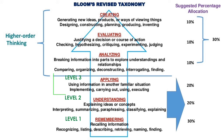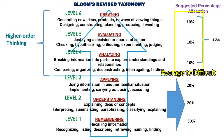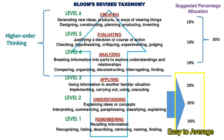For higher order thinking skills, which fall under the average to difficult part, it is important to know the domains so you can classify your questions as to which domain they fall under. There is a suggested percentage allocation for each domain: Remembering, Understanding, and Applying fall under easy to average and take up 70% of the total test items. Analyzing to Creating takes 30% of the total test items.